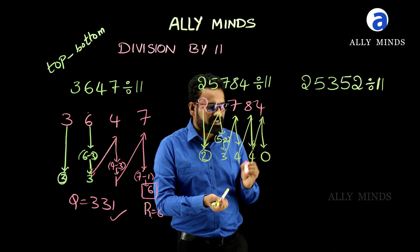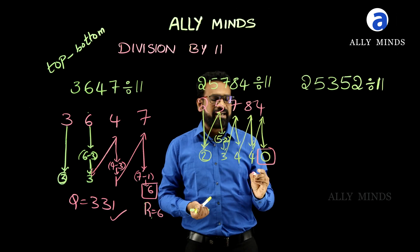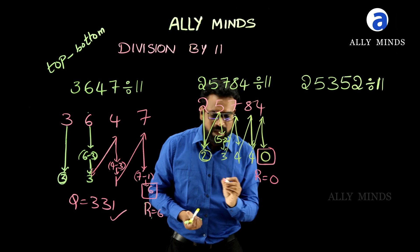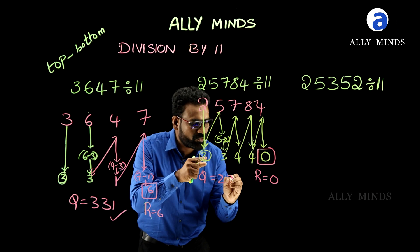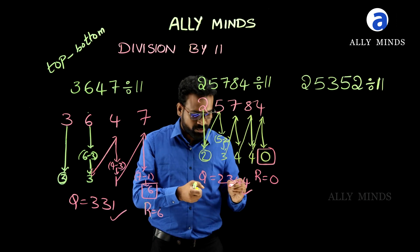Here, the last digit always represents the remainder. So, remainder is 0 and the remaining numbers are the quotient: 2, 3, double 4 — that is 2344 is our quotient.